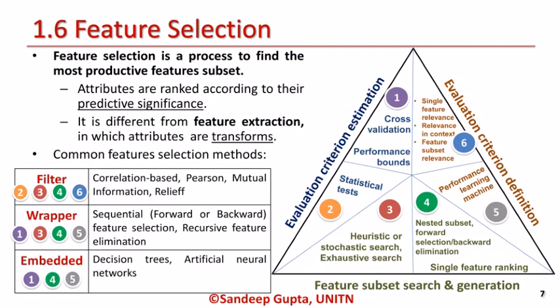Feature selection is a process to find the most productive feature subset. Features are ranked according to their predictive significance. It is certainly different from the feature extraction process, which reduces attributes or features for better understanding. Some of the benefits of feature selection are to reduce dimensionality and remove noise, and to improve classification model performance by speeding up learning and improving predictive accuracy. Feature selection methods can be classified as filter method, wrapper method, and embedded method.